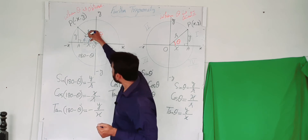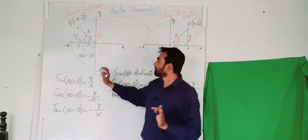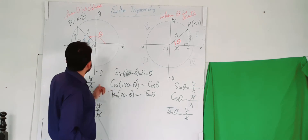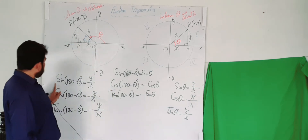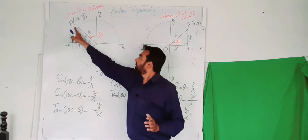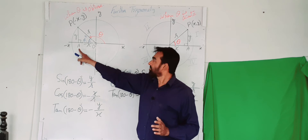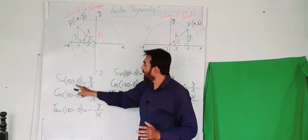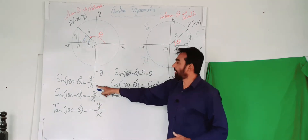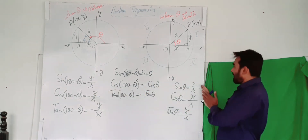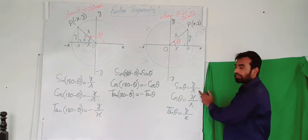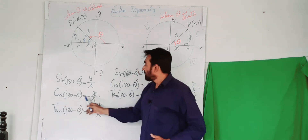I am labeling this angle as 180 minus theta. Now considering triangle POA: sin(180 - θ) = perpendicular/hypotenuse. The perpendicular is y and the hypotenuse is r, so sin(180 - θ) = y/r. You can see that this is the same value as sin θ, so sin(180 - θ) = sin θ.